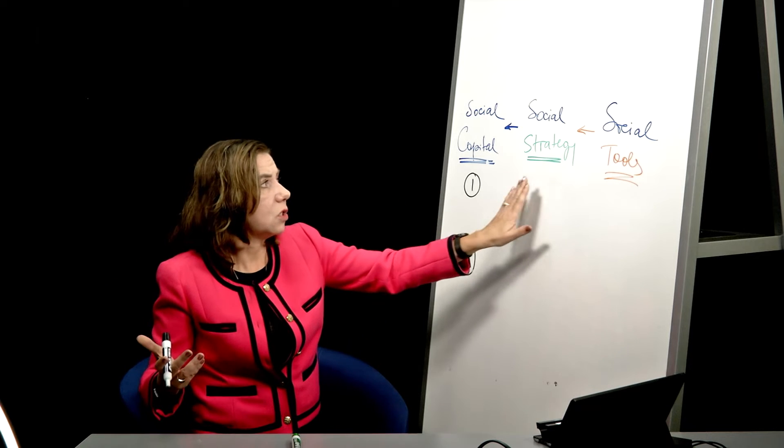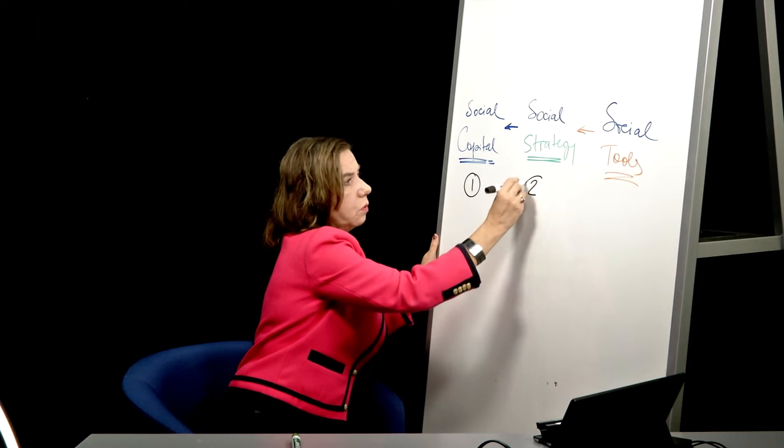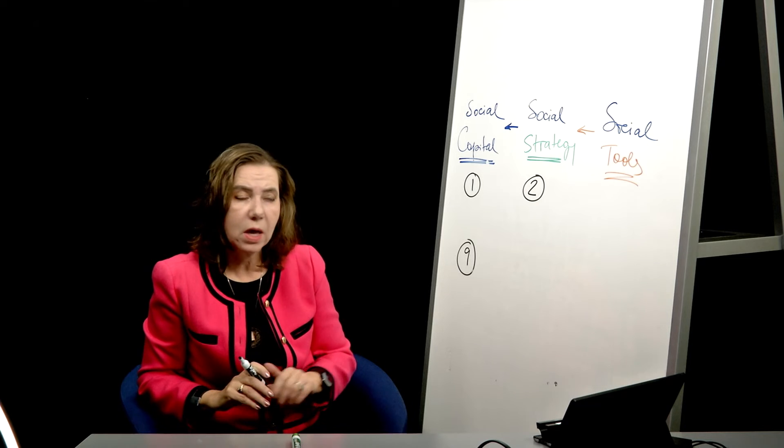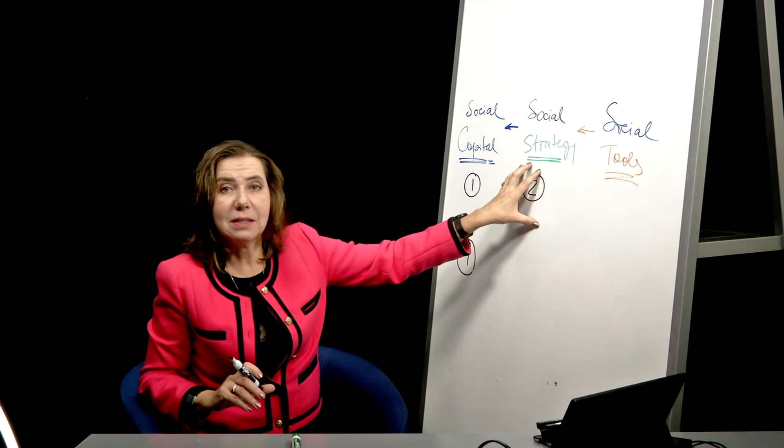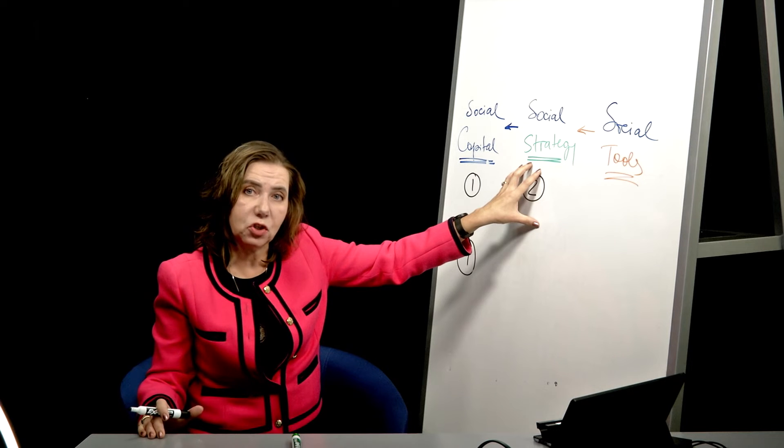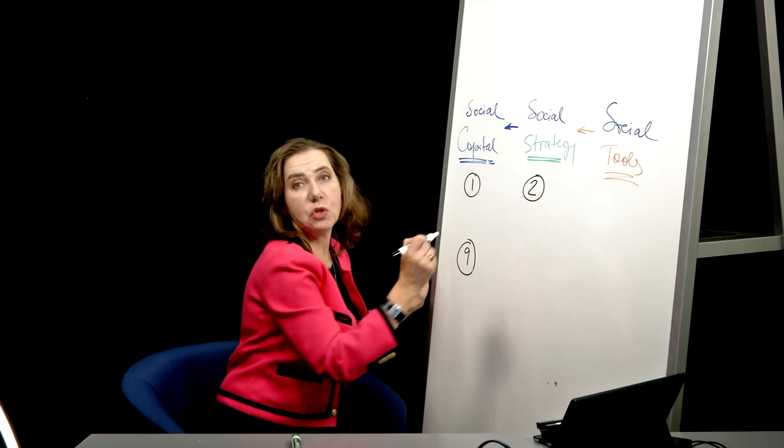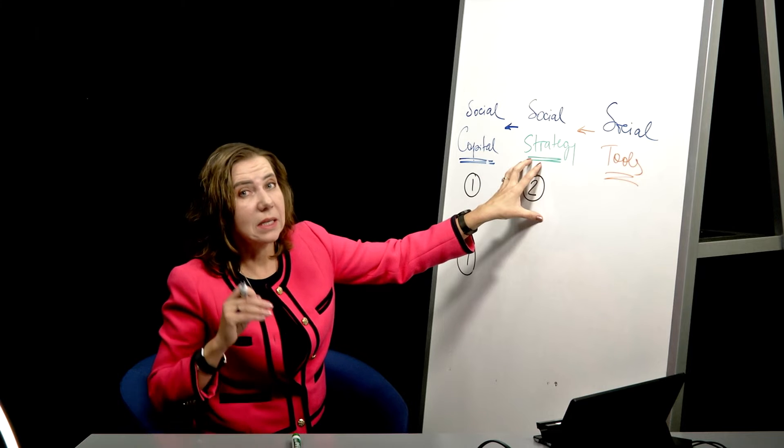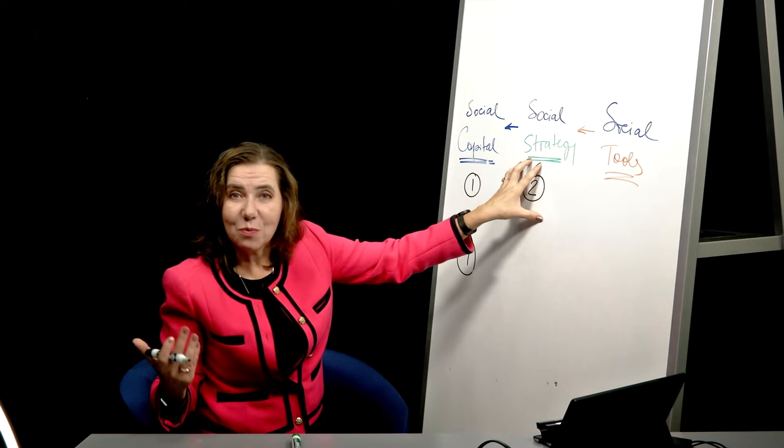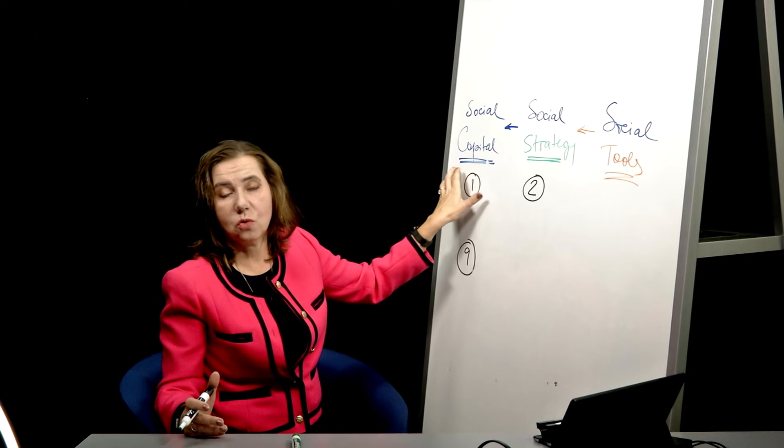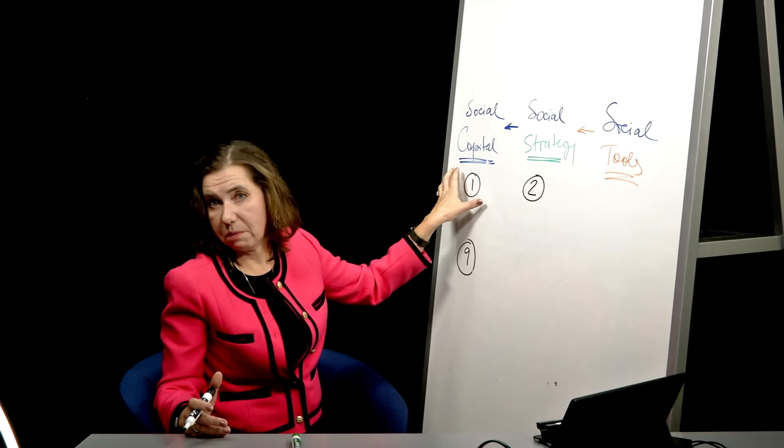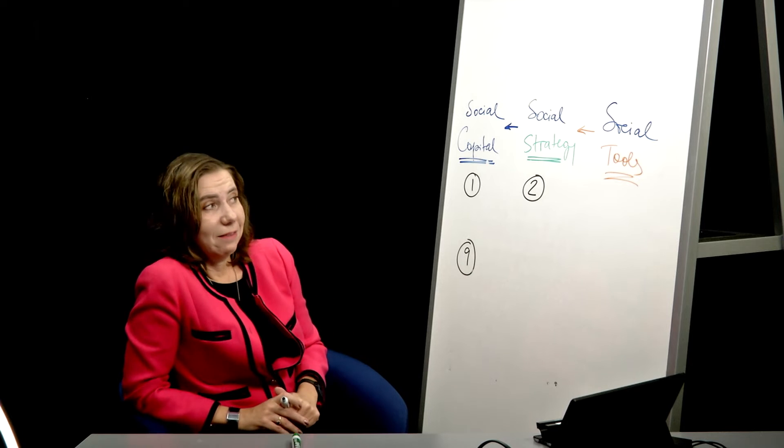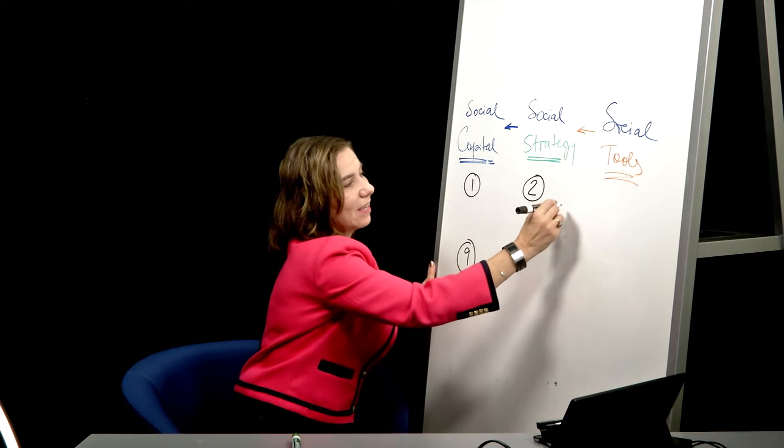Then in model number two, we will discuss what types of strategies you usually follow. We will discuss that people follow four different types of strategies and we will figure out which one is yours naturally and which one you might consider using more if you want to accumulate your social capital at a better speed and with better success.